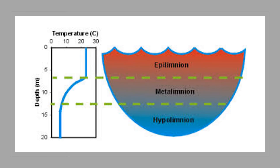Lakes can be broken down into three parts. The top layer, consisting of the surface, is known as the epilimnion, which is the warmest part of a lake, from the surface to a depth of six meters. The middle of the lake, called the metalimnion, varies in temperature and ranges from six to twelve meters in depth. The bottom of the lake, known as the hypolimnion, is the coldest and ranges from twelve meters to below.